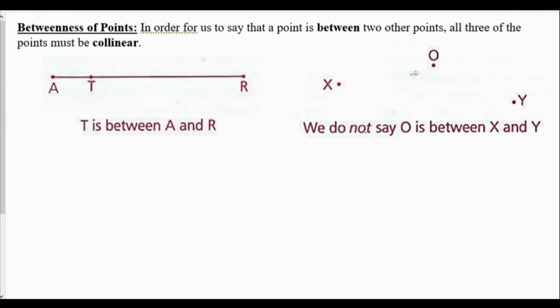Now we have betweenness of points. In order for us to say that a point is between two other points, all three points must be collinear. Remember, between does not mean midpoint — between just means in the middle of the two points. In my diagram to the left, points A, T, and R — T is between A and R. In my diagram to the right, points X, O, and Y — we do not say O is between X and Y because these are not collinear.